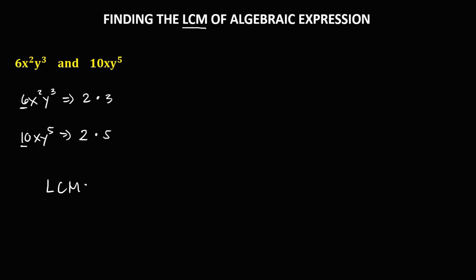To find the LCM, first we write the prime factors of the first expression: 2 times 3. For the second expression, since we already have 2, no need to add it again. Then we include 5, so times 5. Simplifying: 2 times 3 is 6, and 6 times 5 is 30.